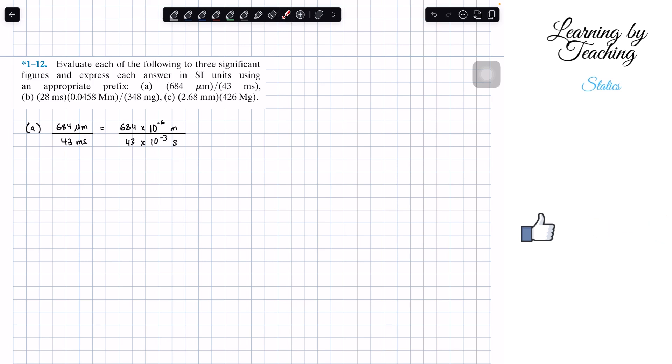So first thing, the times 10 to the negative 3 can be canceling here and then this negative 6 will become negative 3. So we're going to plug into our calculator 684 divided by 43. That's going to give us a total of 15.90697 and it keeps on going. And then we're going to do times 10 to the negative 3 meters per second.